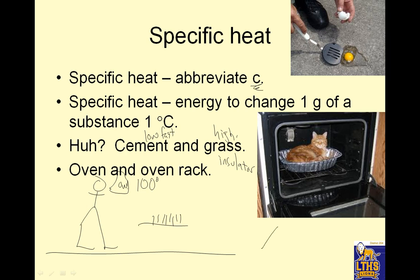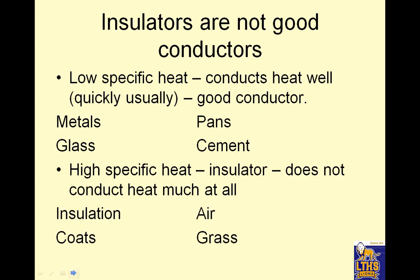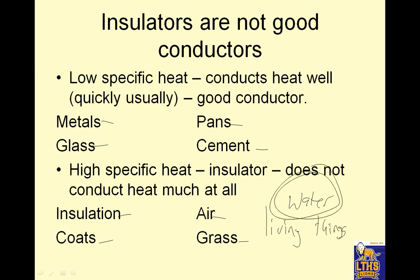Oven and oven rack: preheat an oven to 350 degrees. The temperature of the air equals 350 degrees, and the temperature of the metal rack is also 350 degrees. You can stick your hand in the oven and it goes — oh, it's warm — you wouldn't want to do it forever, but you could leave it there a while. But if you grab the metal rack, you would scream. Insulators are not good conductors. Low specific heat conducts heat well and quickly — metals, glass, pans, cement. High specific heat as an insulator does not conduct heat much at all — insulation, coats, air, and grass. Most living things fall into this category because most living things are made of a lot of water, and water has a high specific heat.